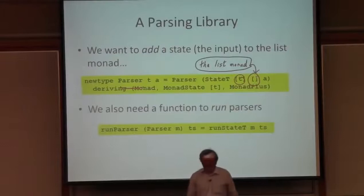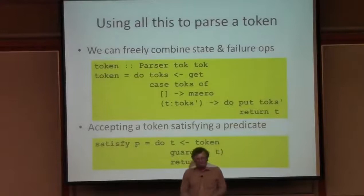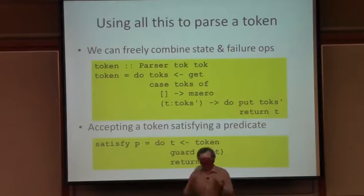And then finally, as I introduce the parser type, I'll also need a function for running the parser, and there it is. So now I've got a parser monad that has state operations, failure operations, and alternative operations, and I can just freely use them together to define the parsing functions that I want.